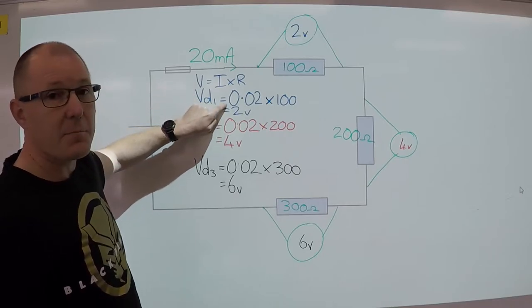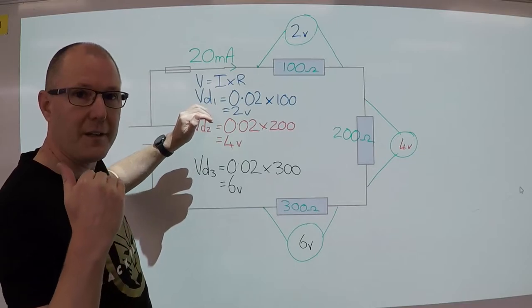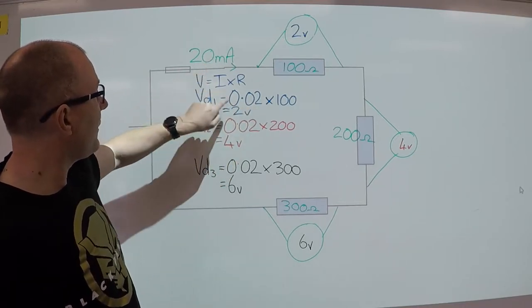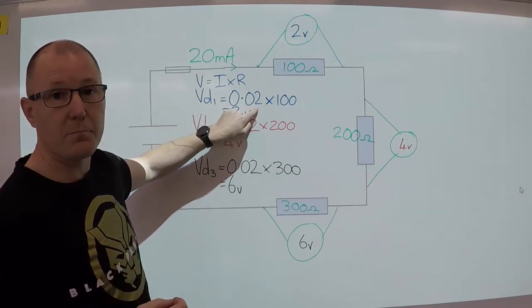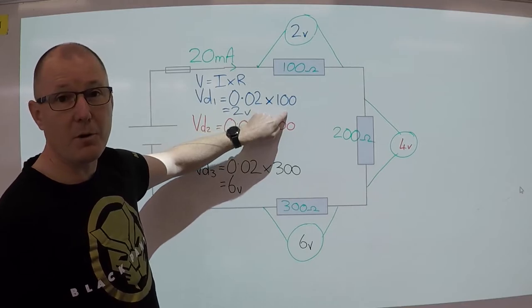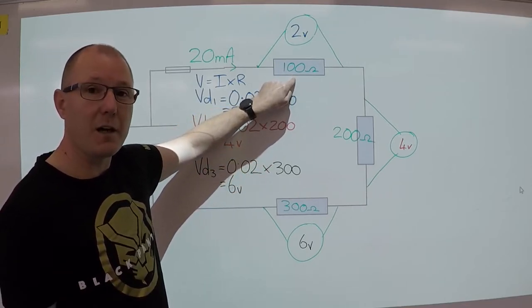So in this case, because we've got 20 mA, we have to break that down to its unit, which is amps. So 20 mA is converted to 0.02 amps. Multiplied by the resistance, in this case against resistor 1, is 100 ohms.